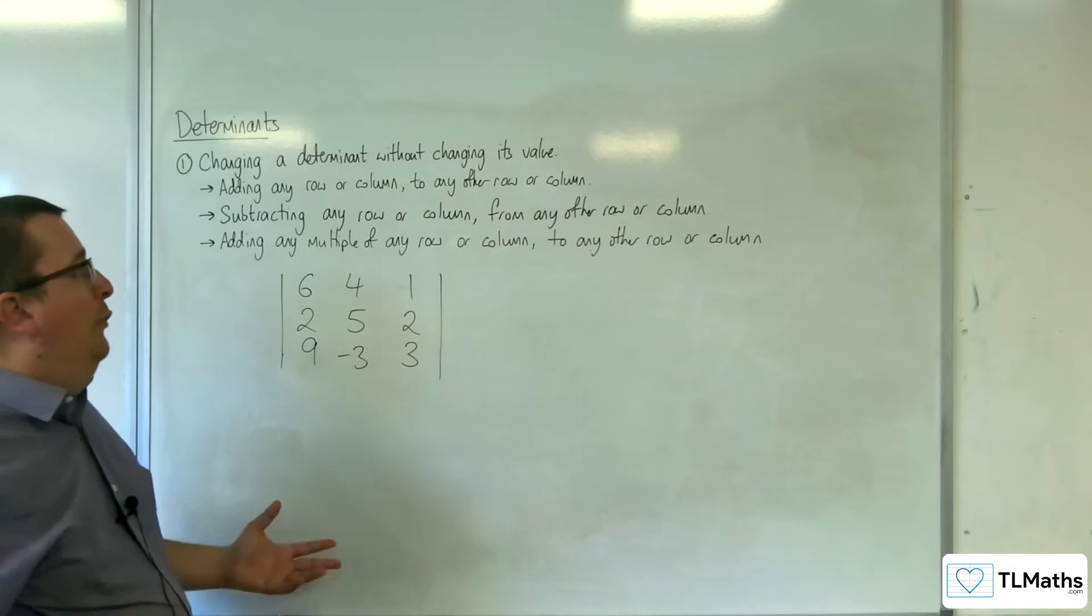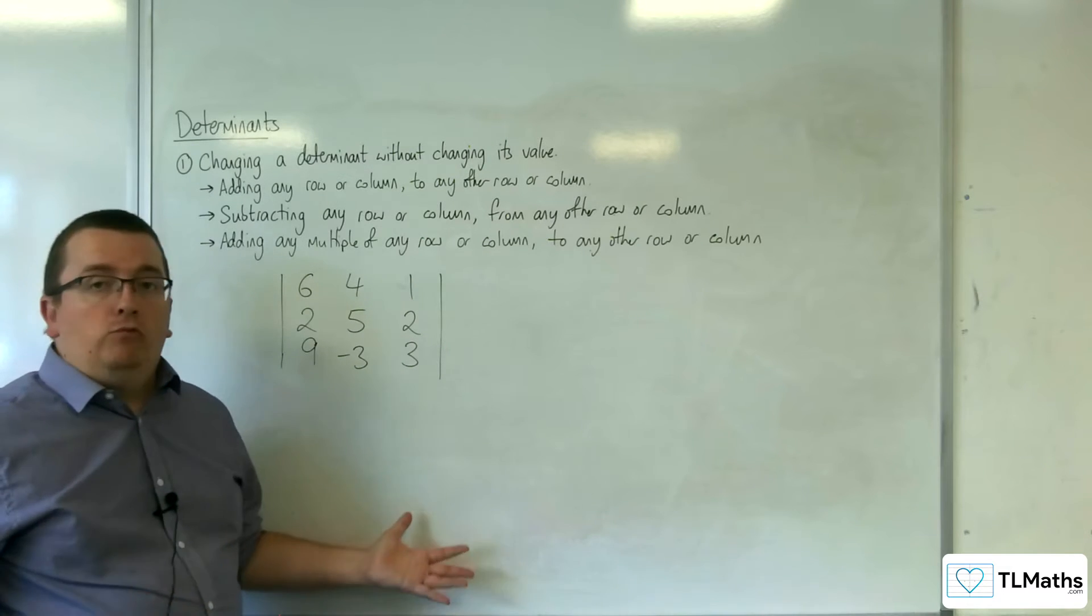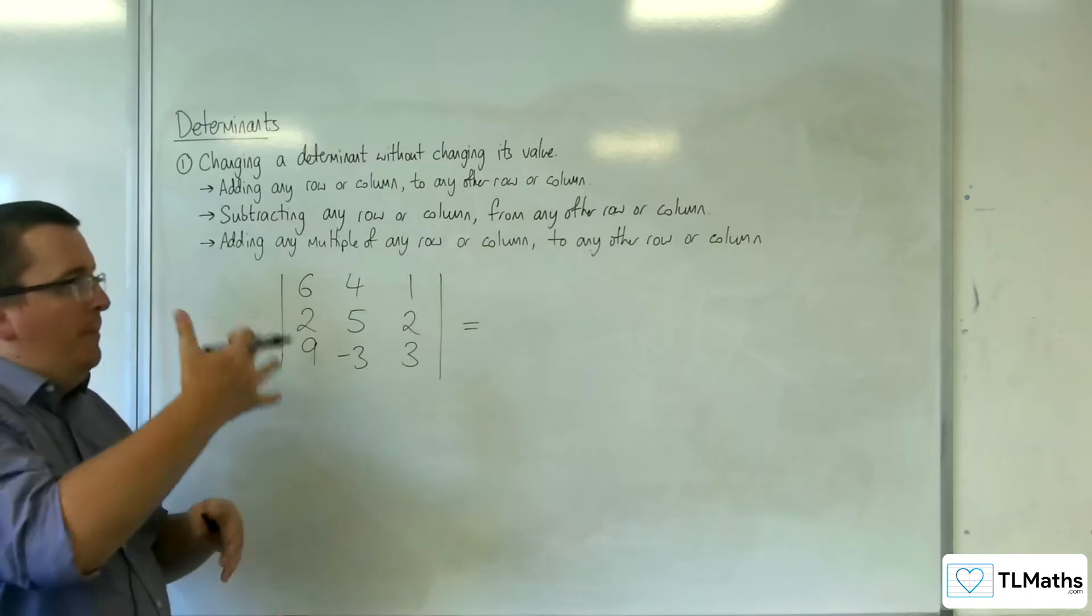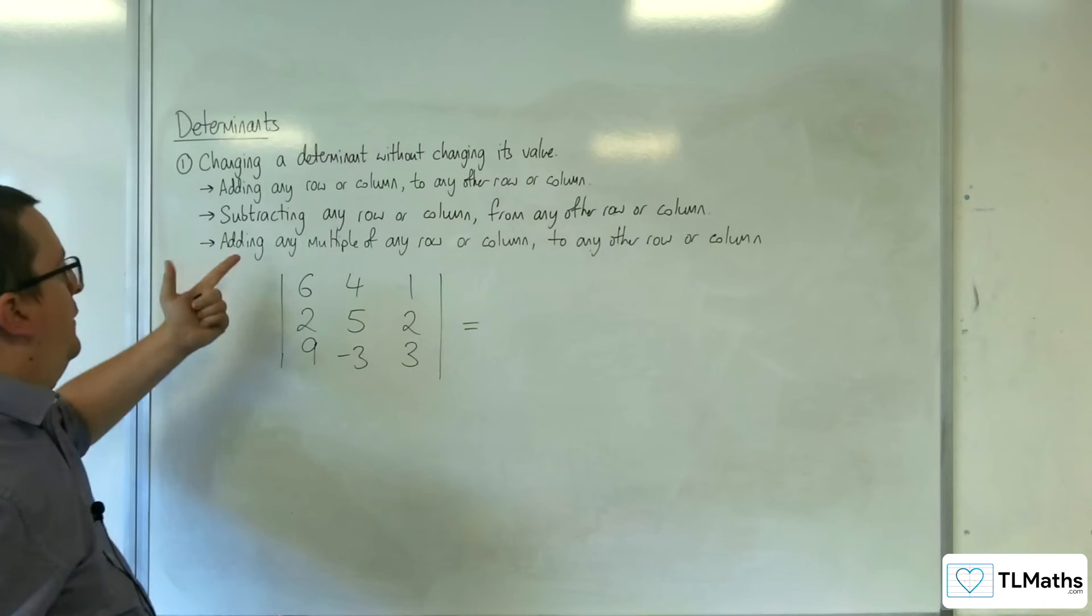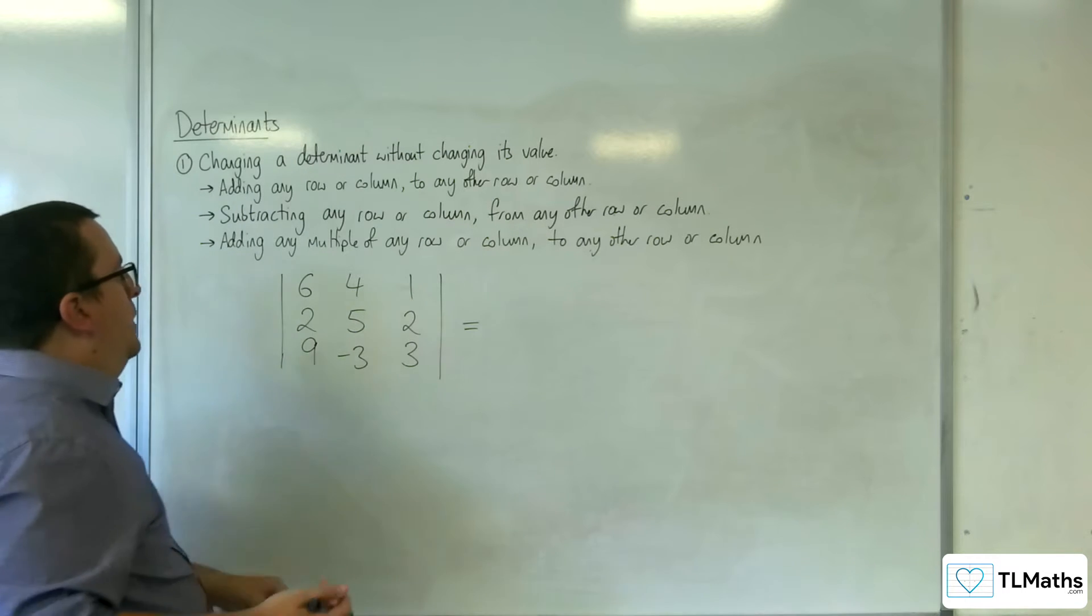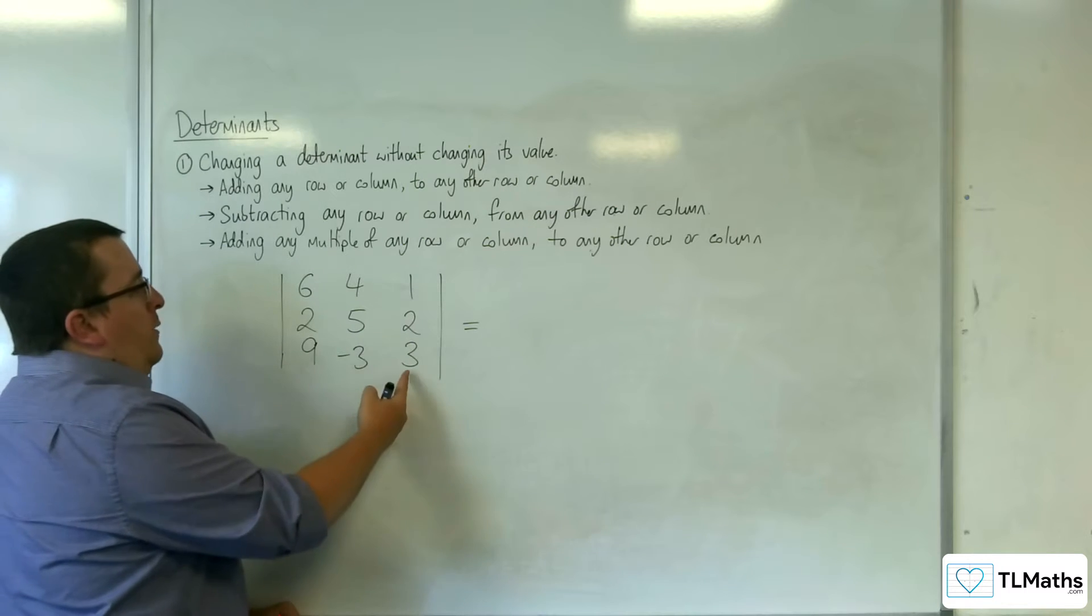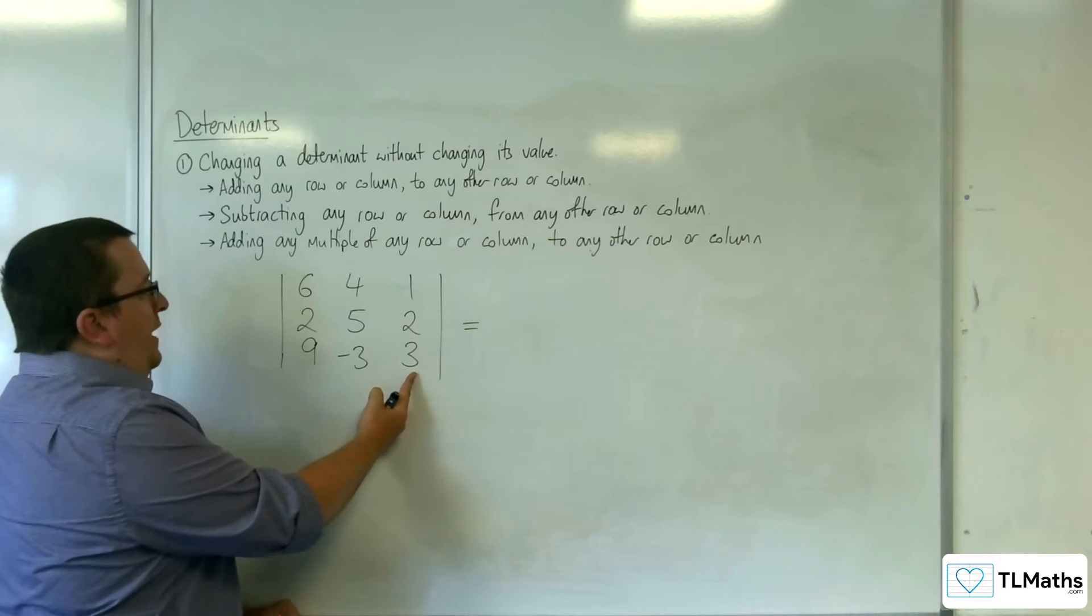You can also add any multiple of any row or column to any other row or column, just like doing repetition of the previous two. And that's the same for subtraction. So maybe you want to knock out that 9, for example, and you go, right, well, if I take away 3 lots of this column, I can do that.